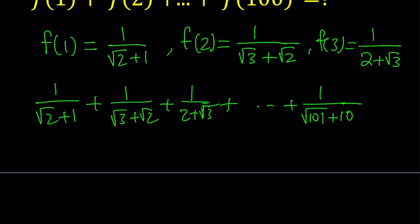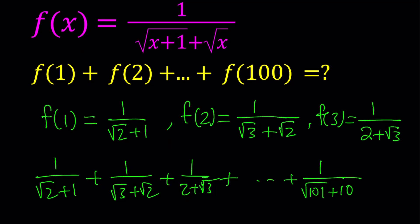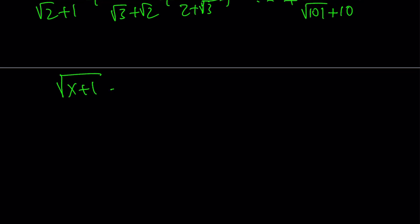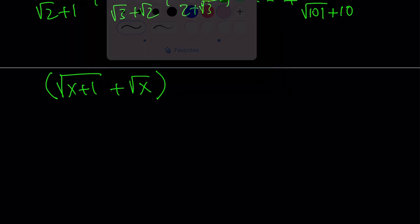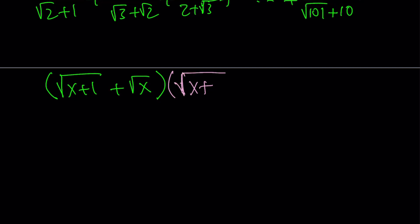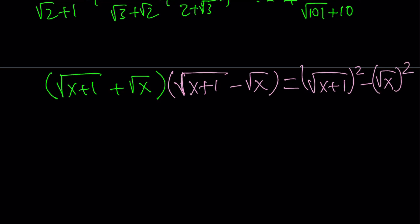Sometimes we have to look at things that don't work to better understand the things that do. We're going to use a different approach involving conjugates. The use of conjugates with radical expressions is extremely important, and with complex numbers as well. We have square root of x plus 1 plus square root of x in the denominator. If you change the plus sign to a minus sign and multiply by its conjugate — square root of x plus 1 minus square root of x — you use the difference of two squares formula. That gives square root of x plus 1 squared minus square root of x squared, which simplifies to x plus 1 minus x, and they cancel, leaving a very nice number.